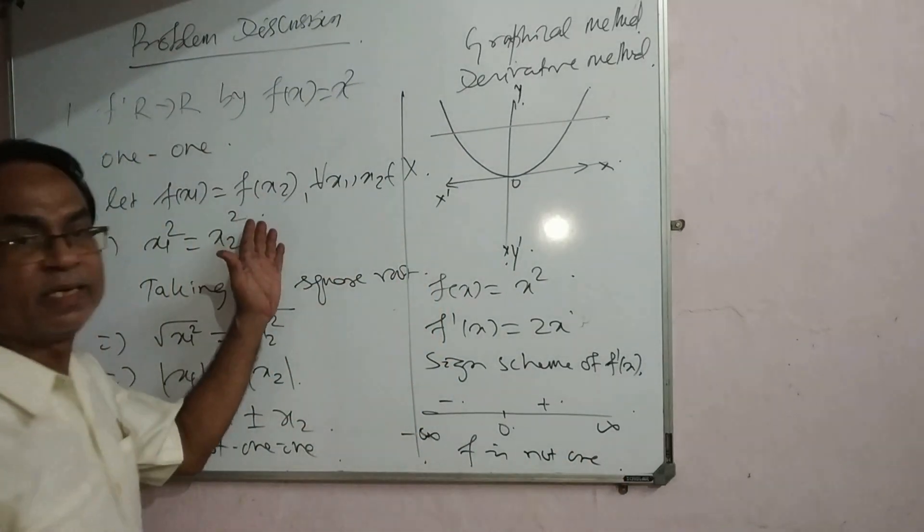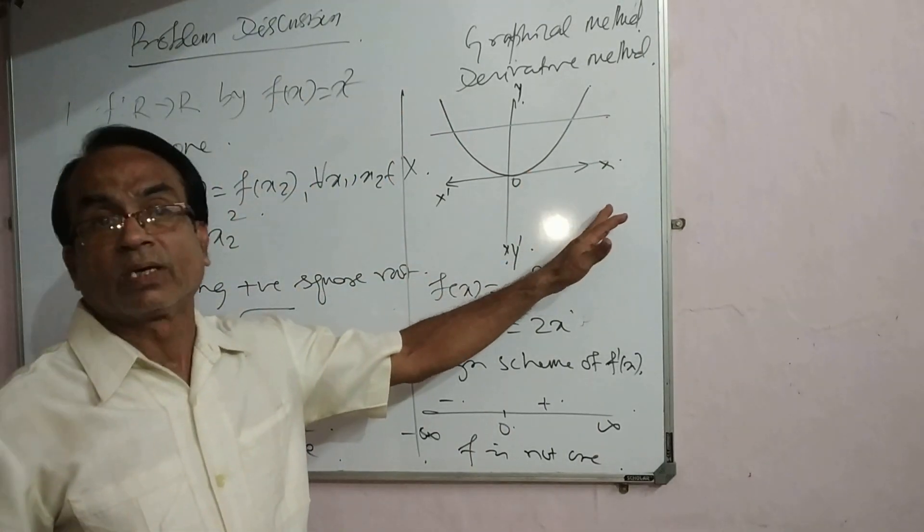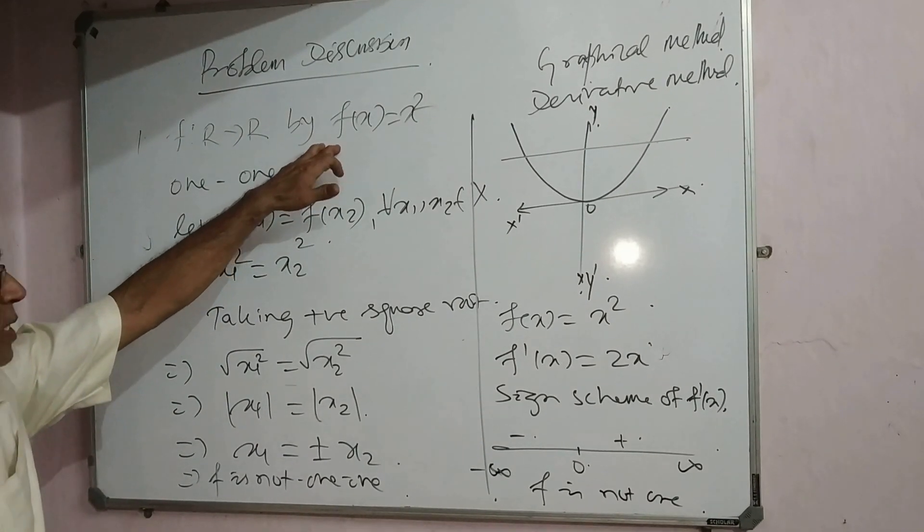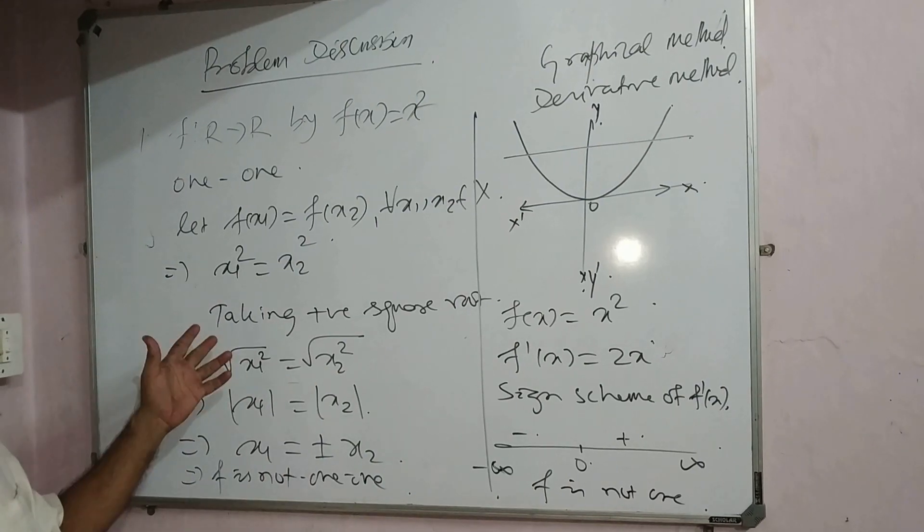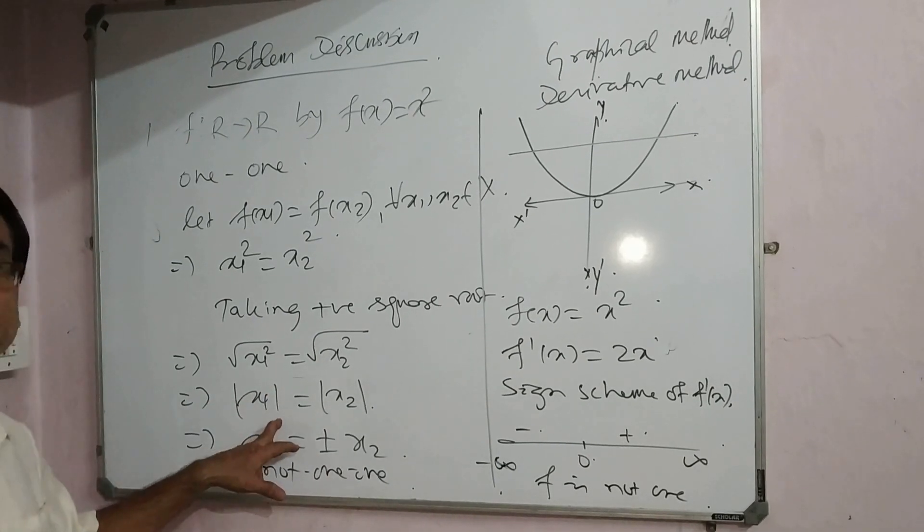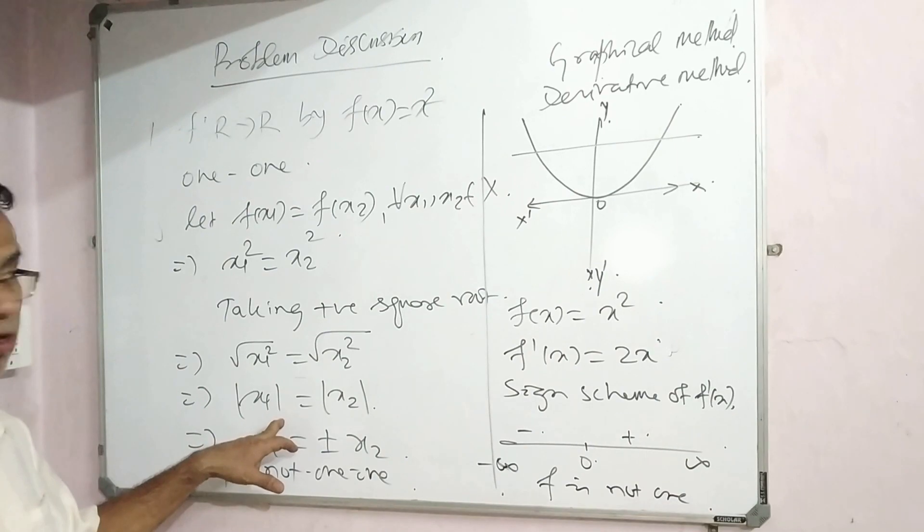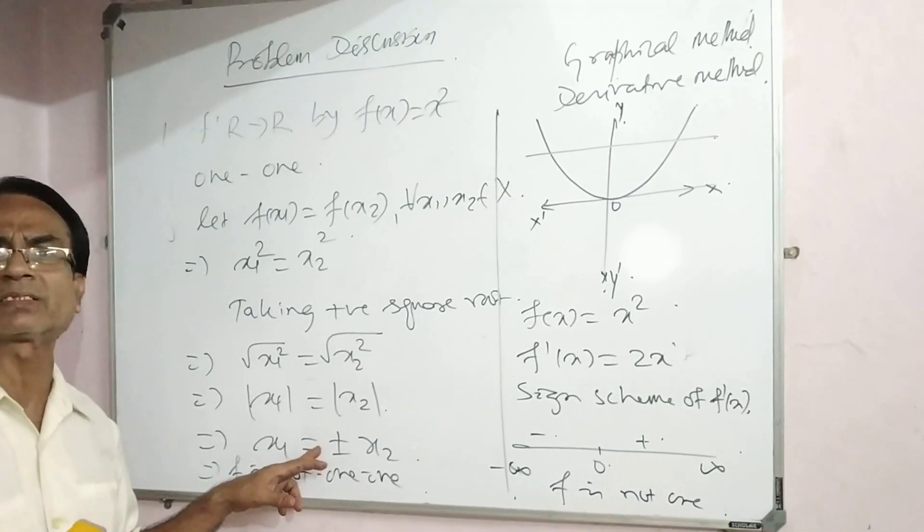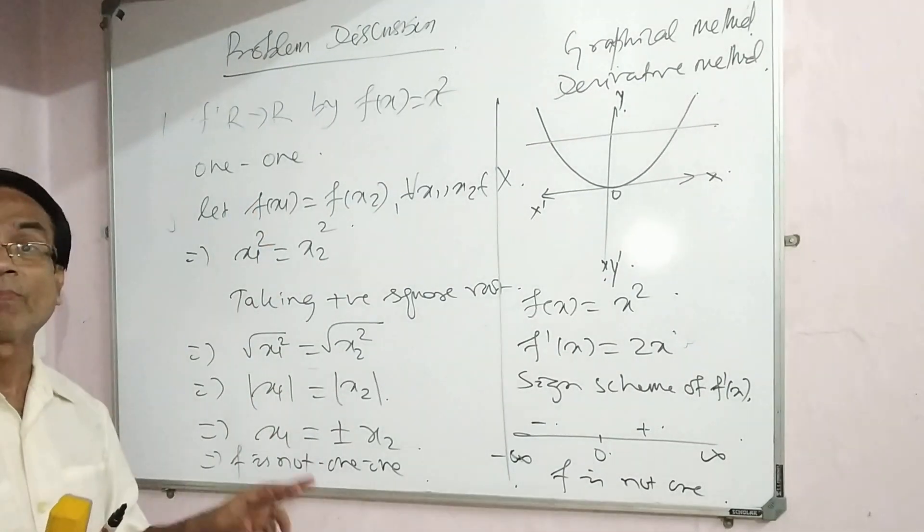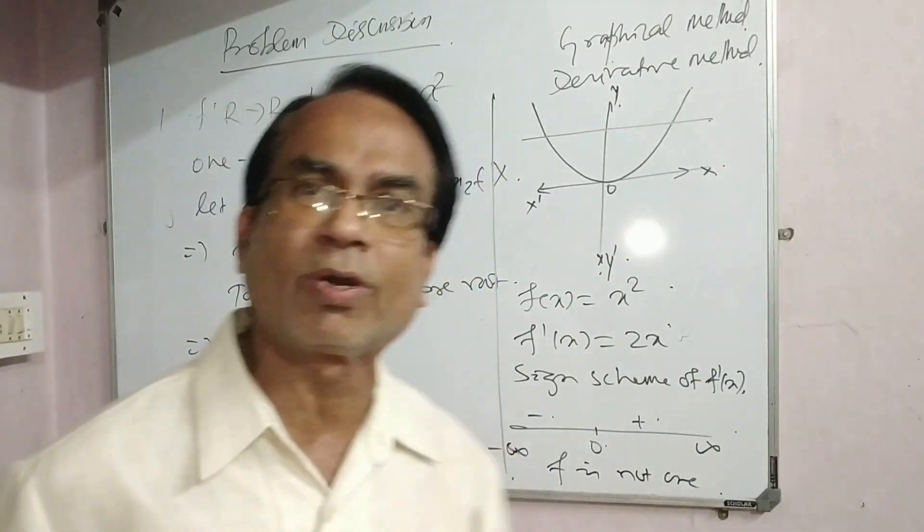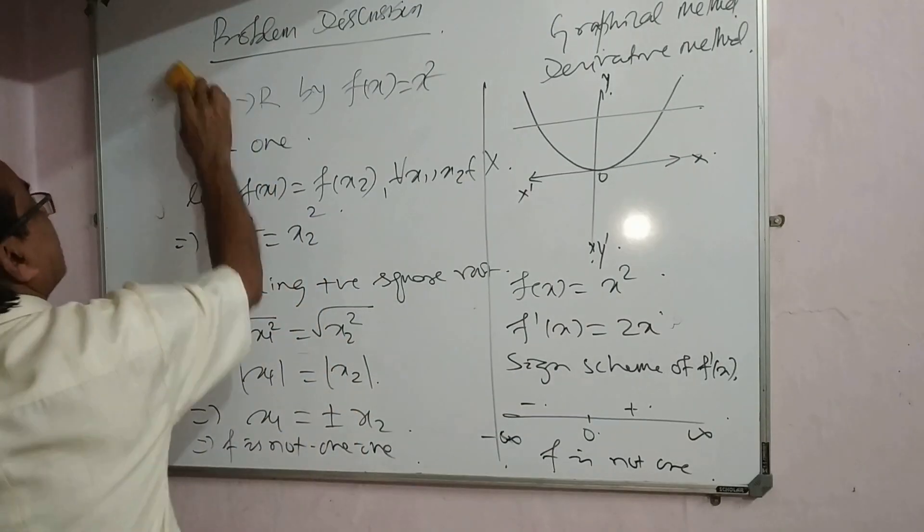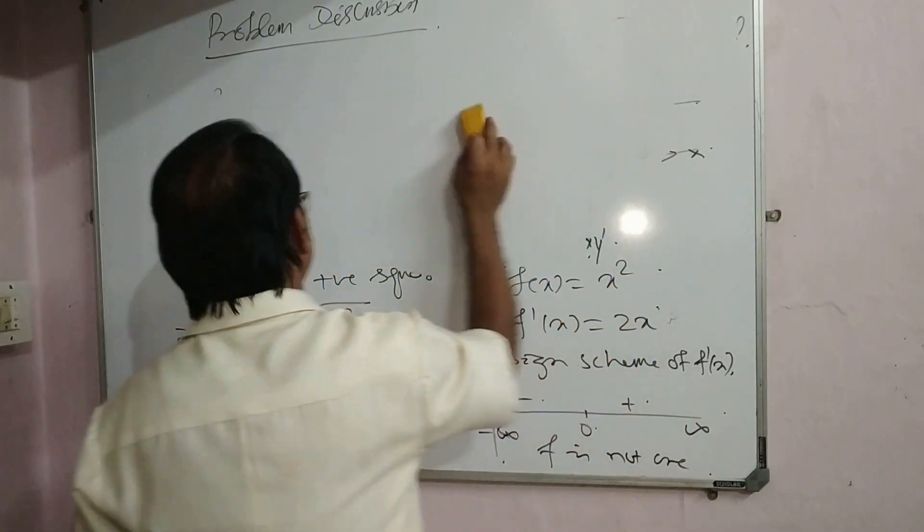So this problem I have done in NCERT method and entrance method. The NCERT problem shows images are same but elements are not same because of the absolute symbol. Students often ask why plus or minus, and the answer is modular sign takes plus or minus in real numbers but not in natural numbers. For quick entrance answers, use graphical derivative methods.